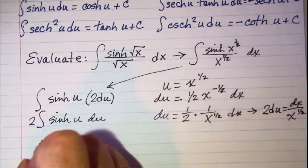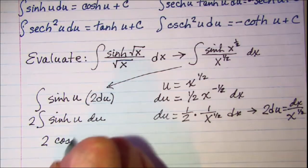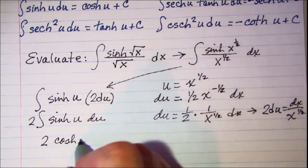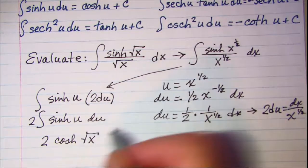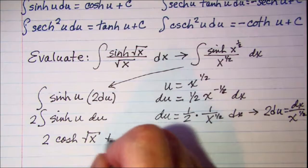So this is 2 times the hyperbolic cosine of x to the one-half, which is now we can put back our root x, and then plus a constant.